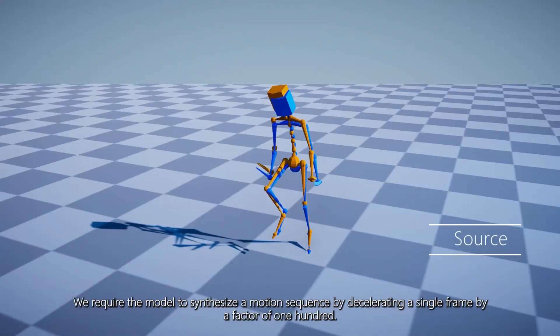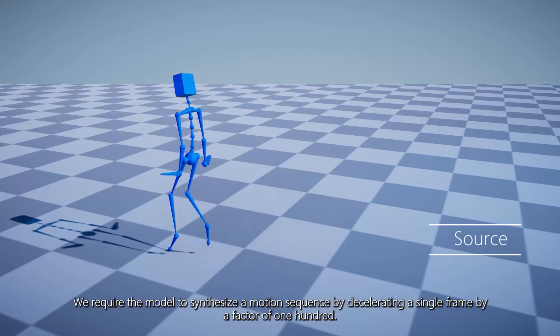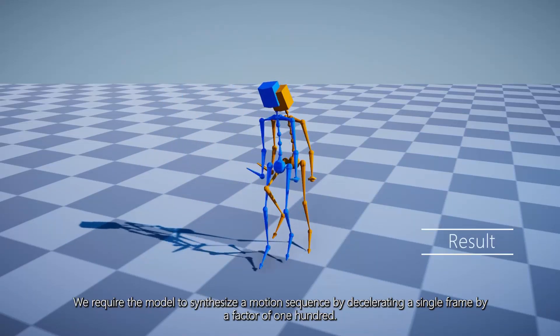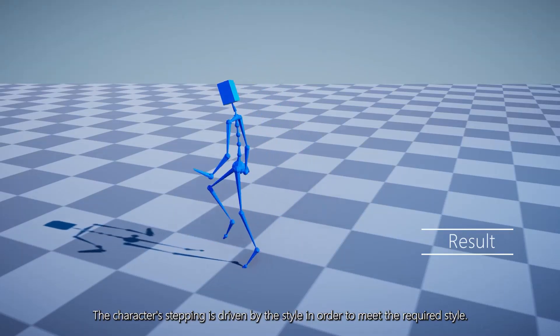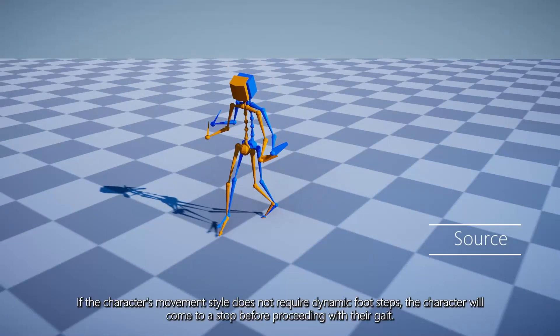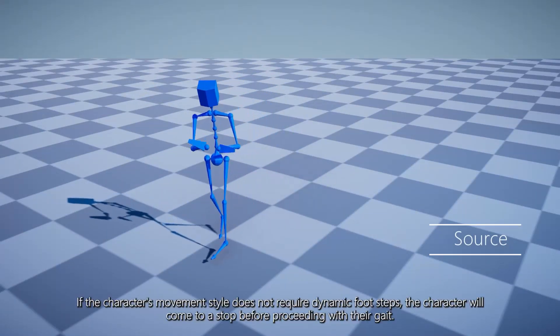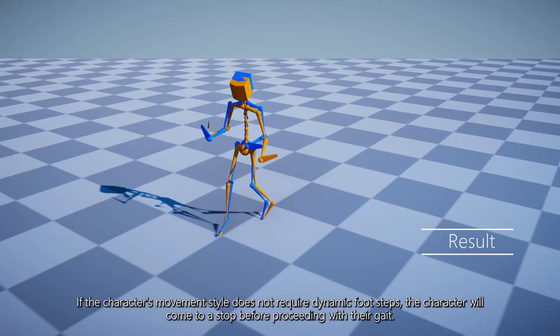We require the model to synthesize a motion sequence by decelerating a single frame by a factor of 100. The character's stepping is driven by the style in order to meet the required style. If the character's movement style does not require dynamic footsteps, the character will come to a stop before proceeding with their gait.